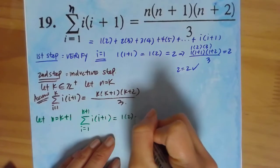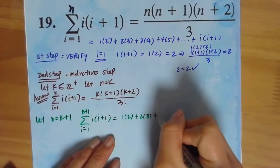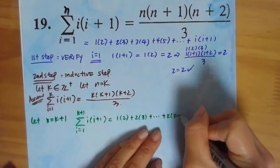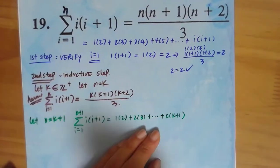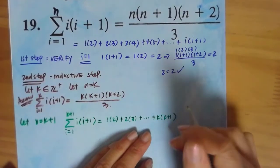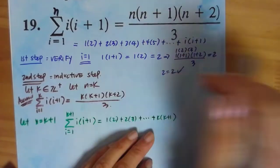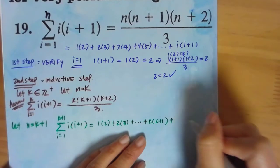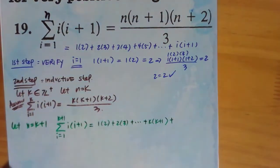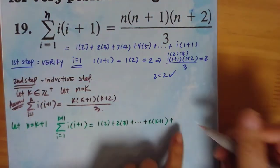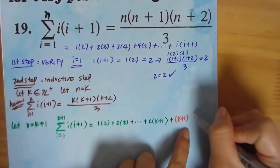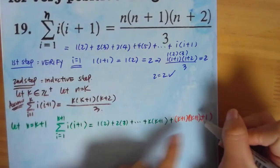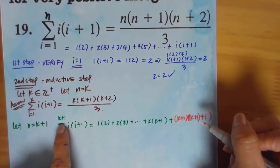1 times 2 plus 2 times 3 plus dot dot dot plus k times k plus 1, right? That's the last step. That's the last one. From here, that's the last one if you just write out the series here. But we're going to add one more. So I'm going to make that a different color so you see how it's different.